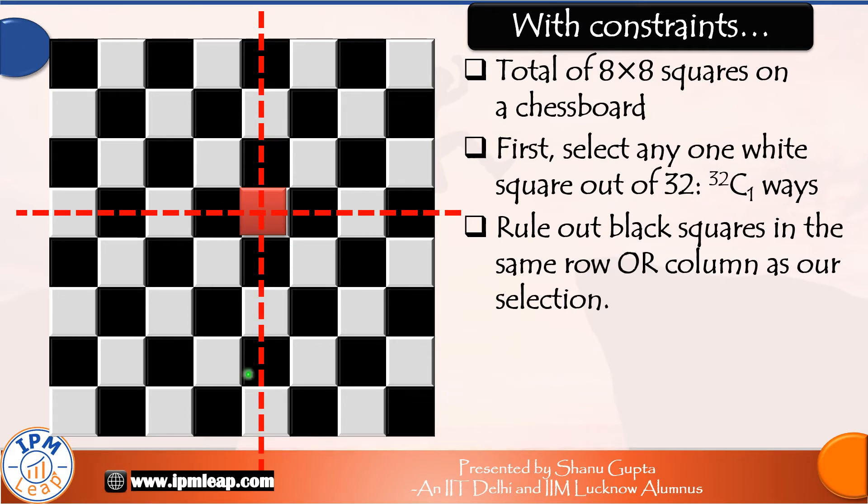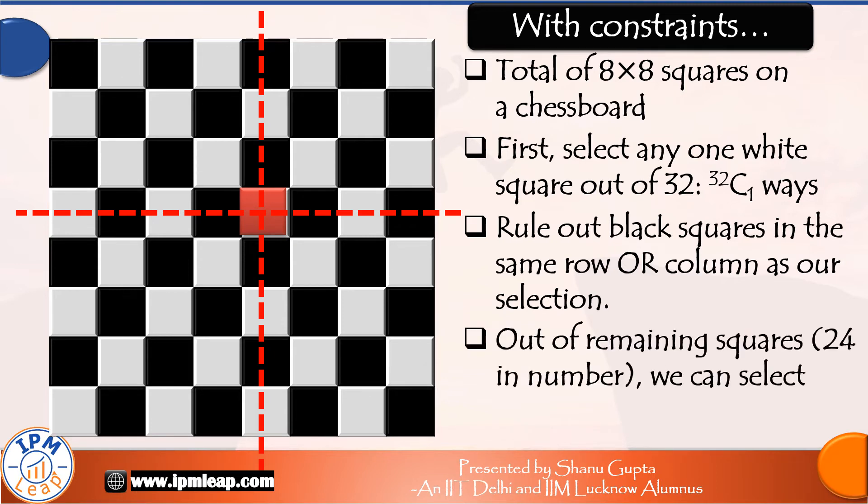Out of the remaining squares, which would be 32 minus 8, that is 24 in number, we can select any black square in 24C1, that is 24 ways.